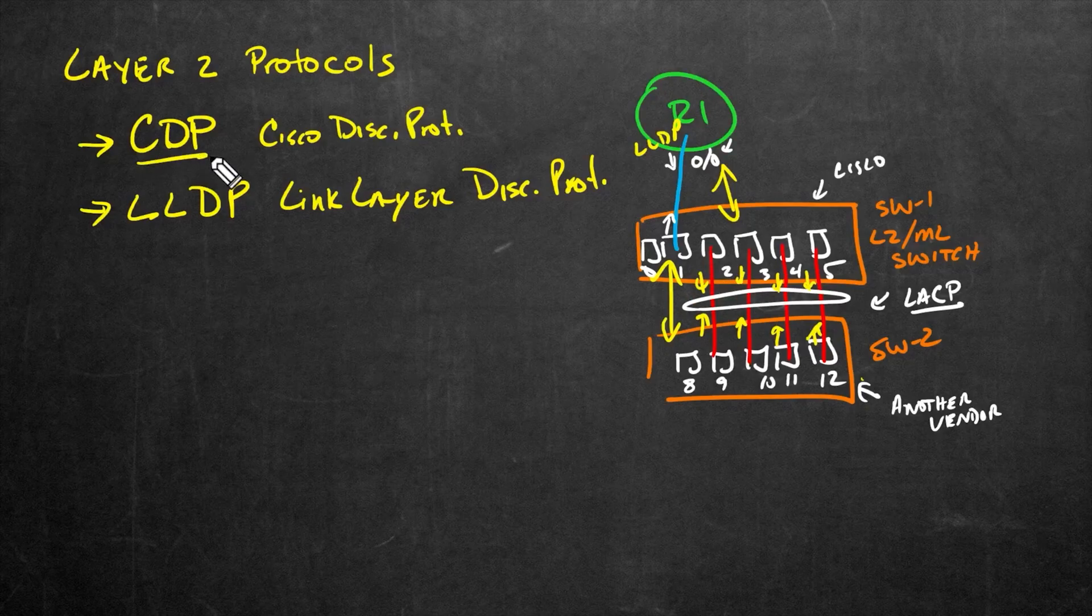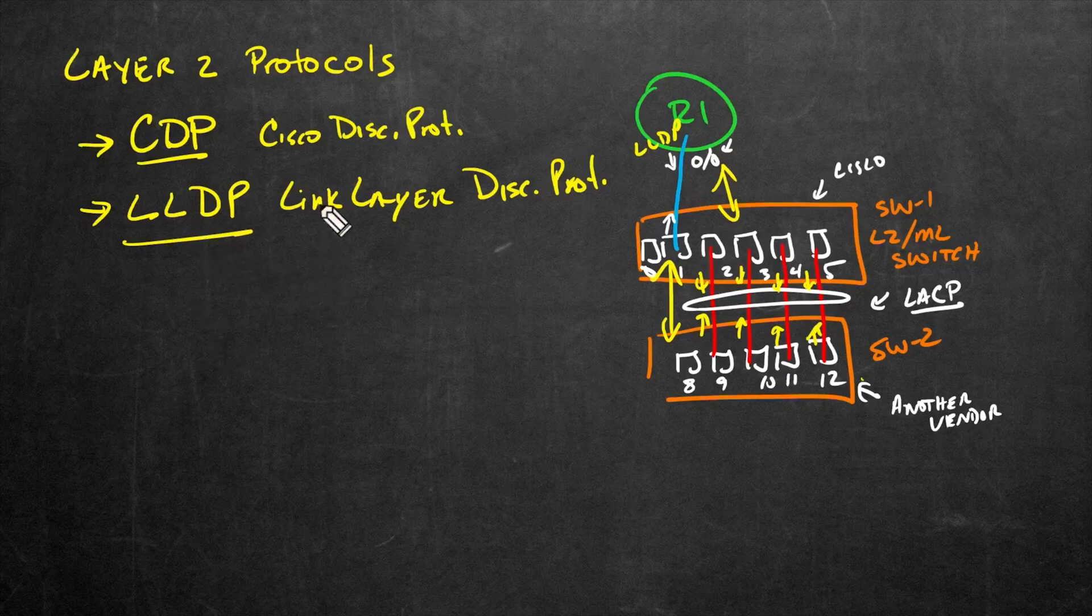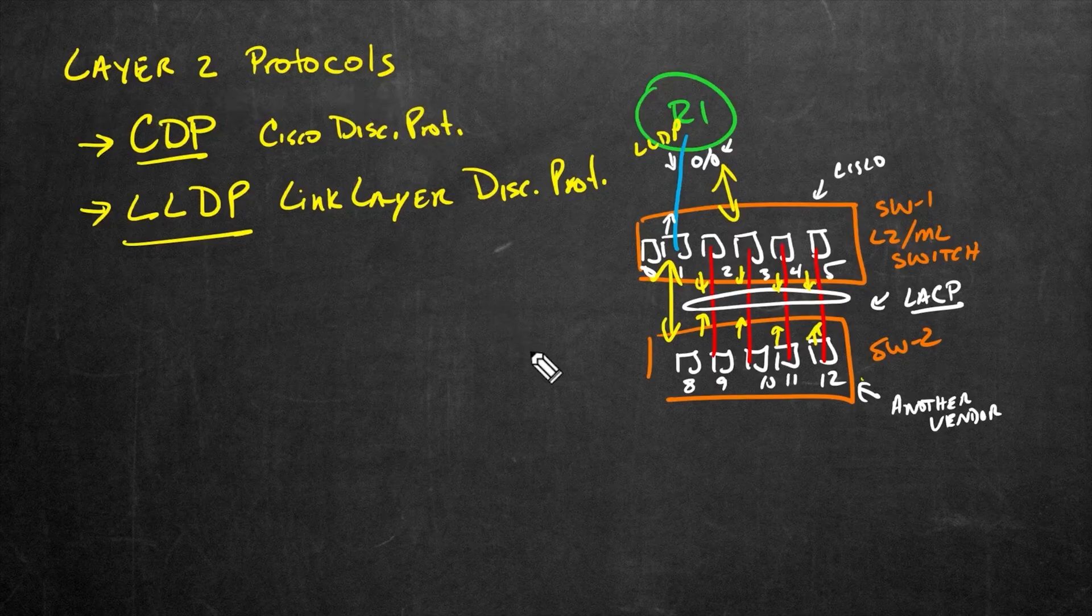The big thing to remember in a Cisco environment, however, is that CDP is enabled by default, and LLDP is not. So if we want to use LLDP, we simply have to enable the feature before we can start using it. So now that we've taken a big picture look at some of these features of these layer two discovery protocols.